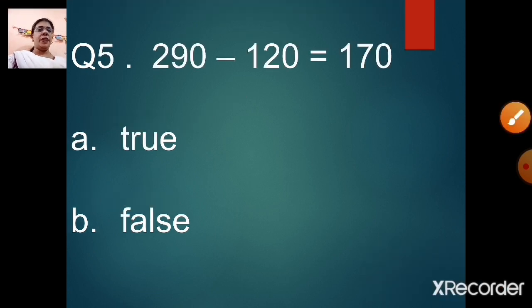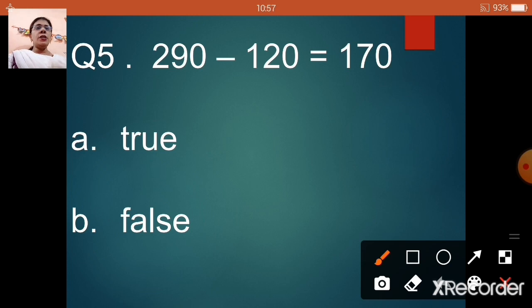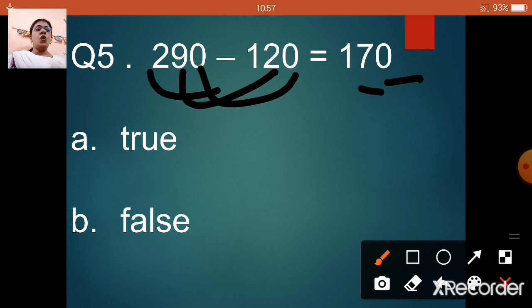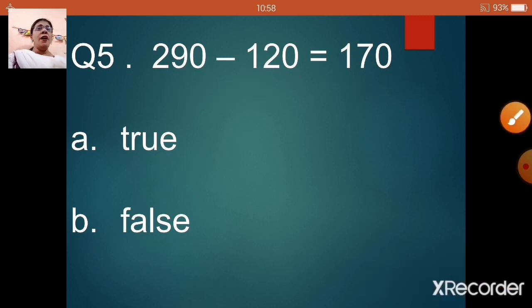Question number 5: 290 minus 120 is equal to 170. Option A: true. Option B: false. Let us subtract and check — 0 minus 0 is 0, 9 minus 2 is 7, 2 minus 1 is 1. So 290 minus 120 equals 170 is correct, and our answer is option A, true. With this we finish our 5 true-or-false questions.